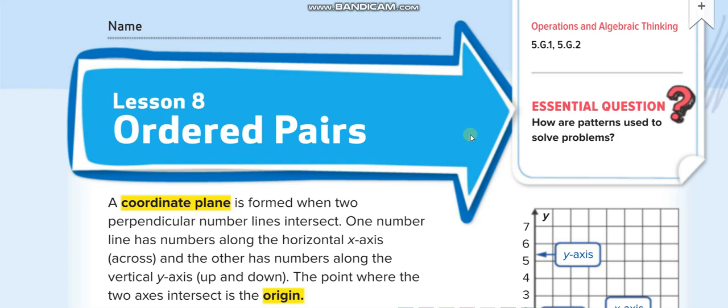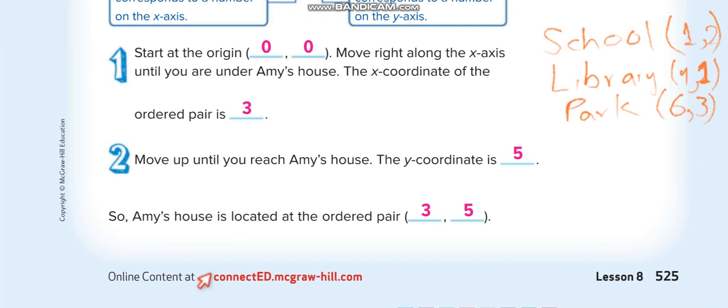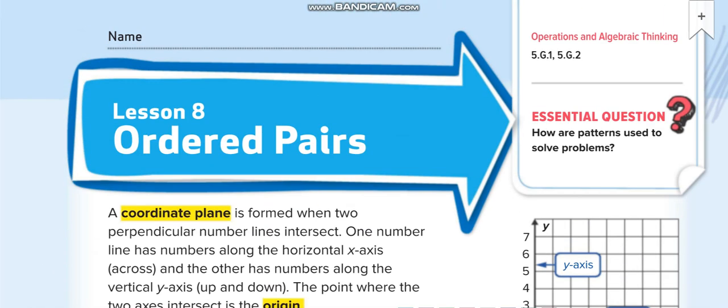Hey everyone, welcome back to my channel, Learn Math with Mr. Saad. Today's lesson for Grade 5, Chapter 7, Lesson 8, is about ordered pairs. The page number is 525.